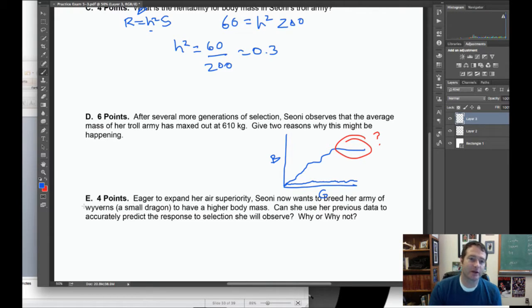There were two answers. The first is that genetic variation is exhausted, not in the physiological sense but in the sense that all of the alleles for high body size in trolls are fixed. There's no more genetic variation, there's no way genetically to make them more massive.